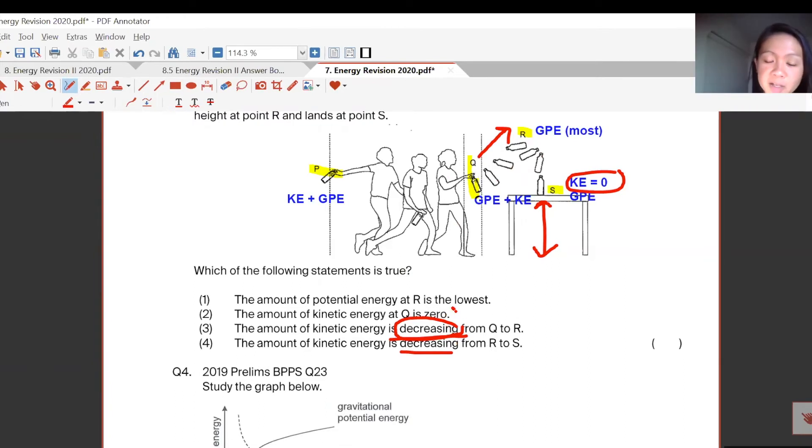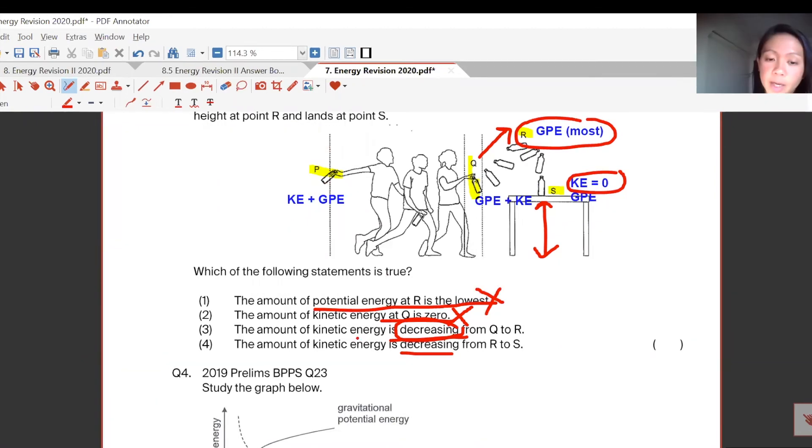Wait a minute, second one is totally out because KE at Q is not zero. The amount of kinetic energy at R is the lowest. No, R has the most GPE. So three and four, decreasing from Q to R.